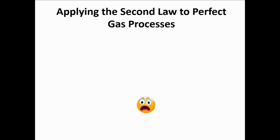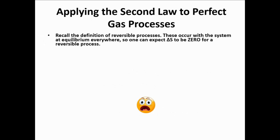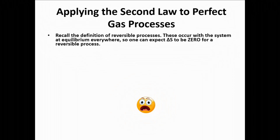Let's apply the second law to perfect gas processes. Recall that reversible processes occur with the system at equilibrium at every step. For a reversible process, which is always at equilibrium, delta S must always be equal to zero. Let's see if the entropy criterion gives us zero when we apply it to isothermal reversible processes.